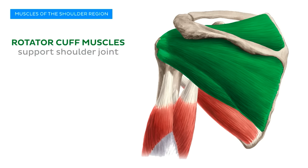Finally, muscle number four of the rotator cuff is the supraspinatus muscle. This muscle originates from the supraspinous fossa of the scapula and reaches across over the head of the humerus to insert at the greater tubercle. And there you have the four muscles of the rotator cuff. A helpful tip to remember the four members of this group is the mnemonic SITS, with 'sits' reminding you that the head of the humerus sits in the glenoid cavity.